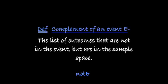Definition of a complement of an event: that is the list of outcomes that are not in the event, but are still in the sample space — things that are not in E, but are in S. The notation used to describe this list is 'not E'.